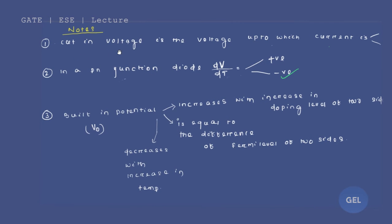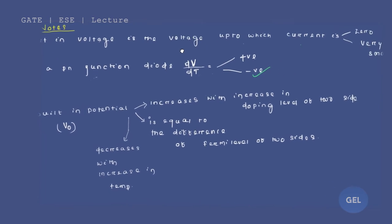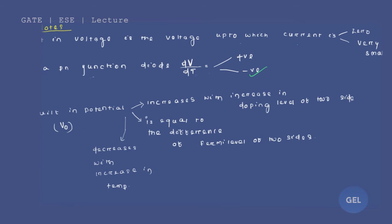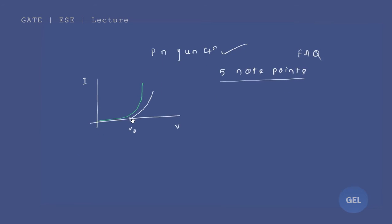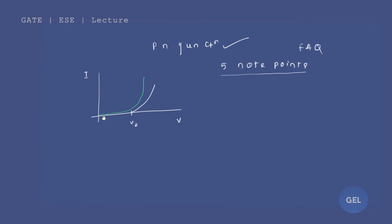The first note point: cutin voltage is the voltage up to which current is zero or very small. Look at the graph carefully — voltage is on the x-axis, current on the y-axis. Till V0, what is the value of current? Is it zero or does it have some small value? The correct graph shows a very small value — not zero. That graph is correct; the one showing zero is wrong.